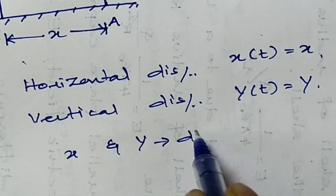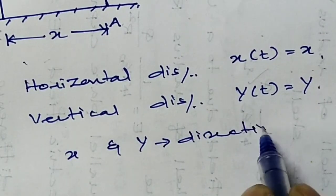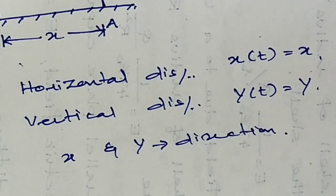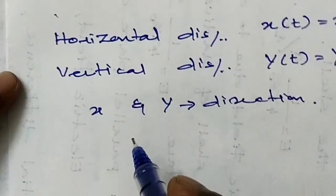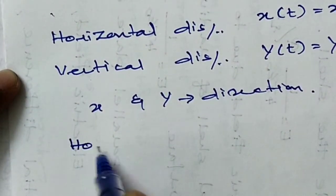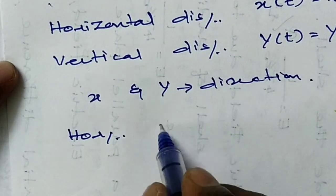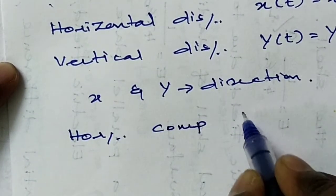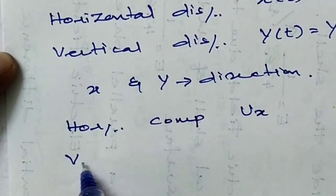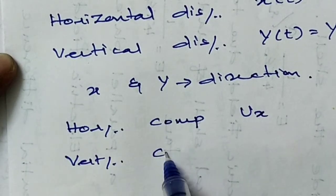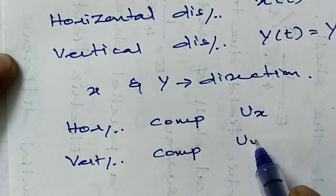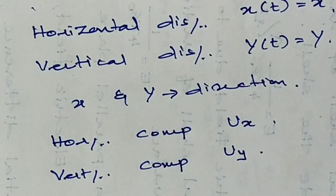For two-dimensional motion, the velocity has both a horizontal component and a vertical component. The horizontal component is Ux and the vertical component is Uy. These are the two components of the initial velocity.